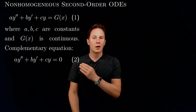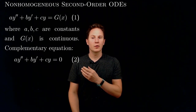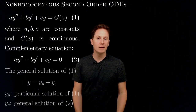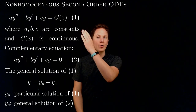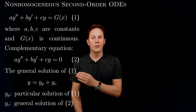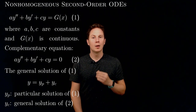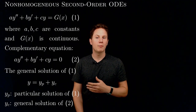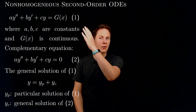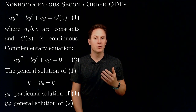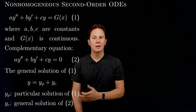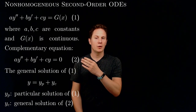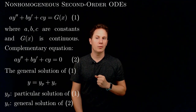These complementary equations with constant coefficients we know how to solve, and there is a theorem that guarantees that the general solution of the non-homogeneous equation is of the form y sub p plus y sub c, where y sub p is any one particular solution of the non-homogeneous equation, and y sub c is the general solution of the complementary equation, which we know how to find.